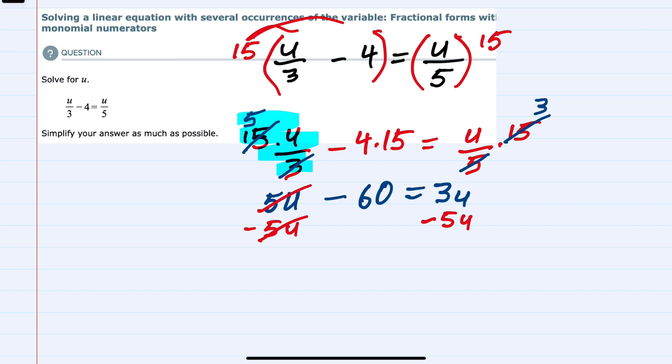That will cancel on the left, leaving me with minus 60. On the right hand side, 3u minus 5u is minus 2u. Then I can divide both sides of the equation by negative 2. That will cancel so that I have the u by itself. On the left hand side, negative 60 divided by negative 2 is 30. So we have solved for u.